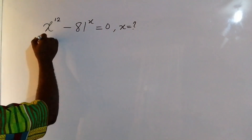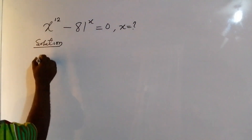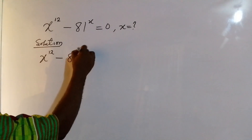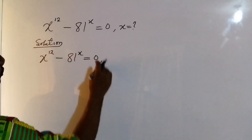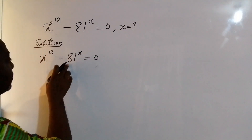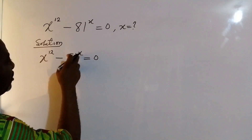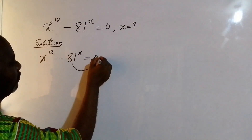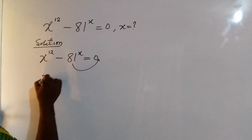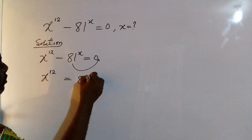So first we have a solution. I bring down the question: x to the power of 12 minus 81 to the power of x equal to 0. Now what I need to do is to isolate 81 to the power of x — that's minus 81 to the power of x — and simply move that to the right hand side. So the equation becomes x to the power of 12 equal to 81 to the power of x.